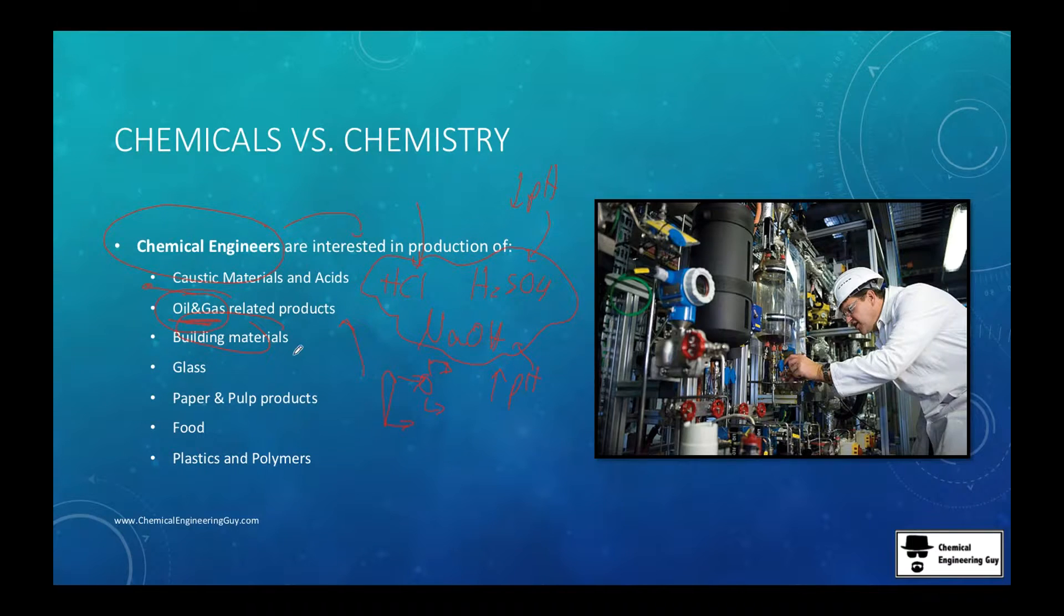They also are into building materials such as cement or sodium carbonate and calcium carbonate. There are plenty of building materials, glass, pyrex, paper and pulp products. Paper is very important but there's many materials that go into packages and these are pulp related.